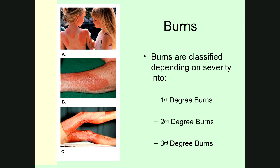If you look at the top picture in A, a sunburn is a good example of a first degree burn. In these burns, usually we just get some redness — it's just that top layer of skin, the epidermis, that's actually damaged. These types of burns tend to do very well healing on their own after some time.